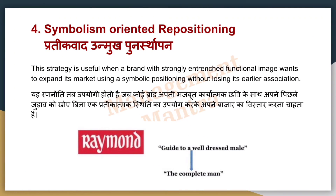Next is symbolic-oriented repositioning. This strategy is useful when a brand strongly builds its image around a symbol or idea. For example, Raymond — with the tagline 'The Complete Man,' guiding to a well-dressed male. Raymond's clothing brand is called 'The Complete Man,' meaning they have made a symbolic position.